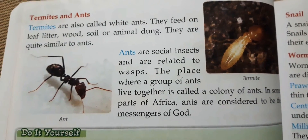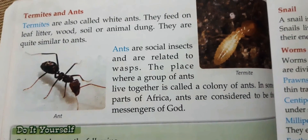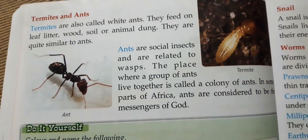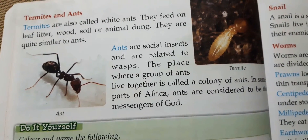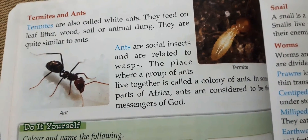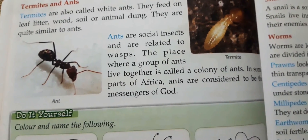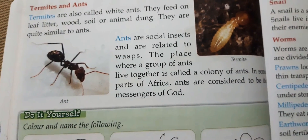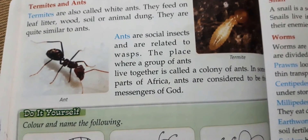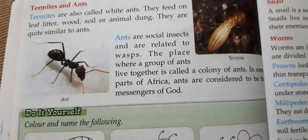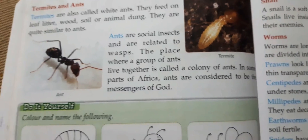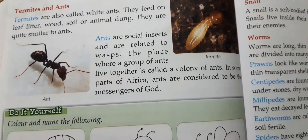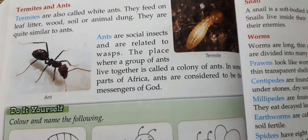Now about termites and ants. Termites are also called white ants. They feed on leaf litter, wood, soil or animal dung. They are quite similar to ants. Ants are social insects and are related to wasps. The place where a group of ants live together is called a colony of ants. In some parts of Africa, ants are considered to be the messengers of God.